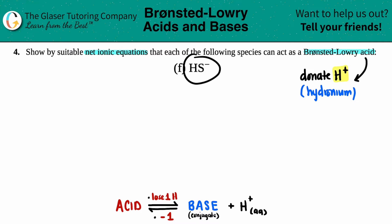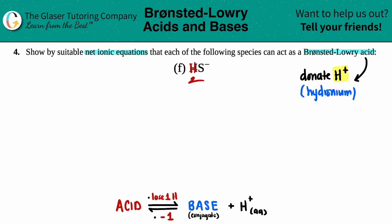If we look at HS⁻, I do have a hydrogen. Here's a little trick: if you see that you have an H in front of a compound — so the first element stated is an H — it's going to be an acid, or it can act as an acid. So in this case, I know that HS⁻ can act as an acid. It does have an H in the front of the compound.